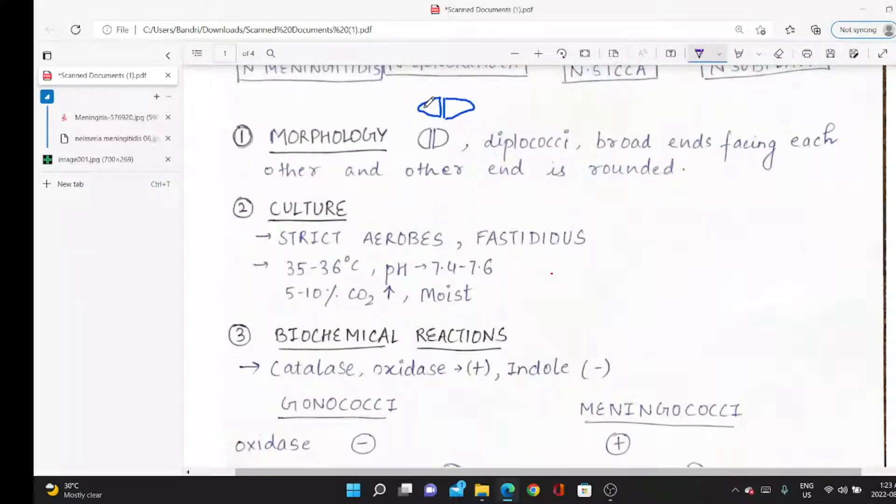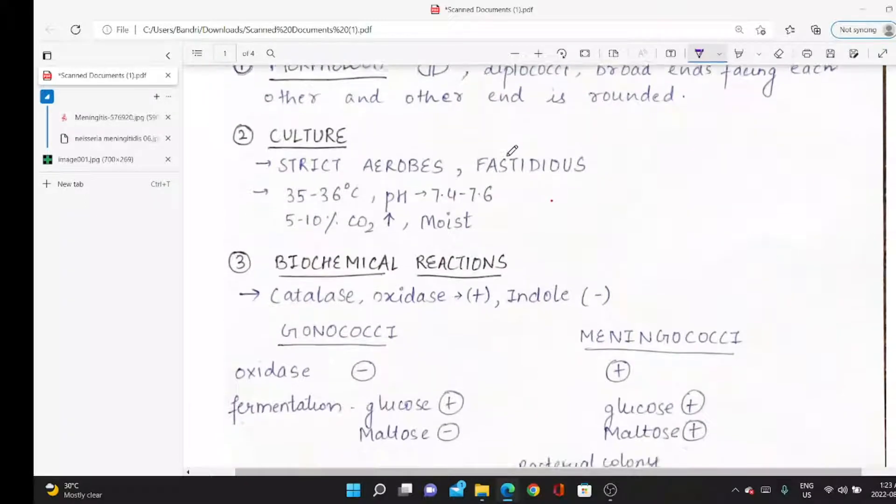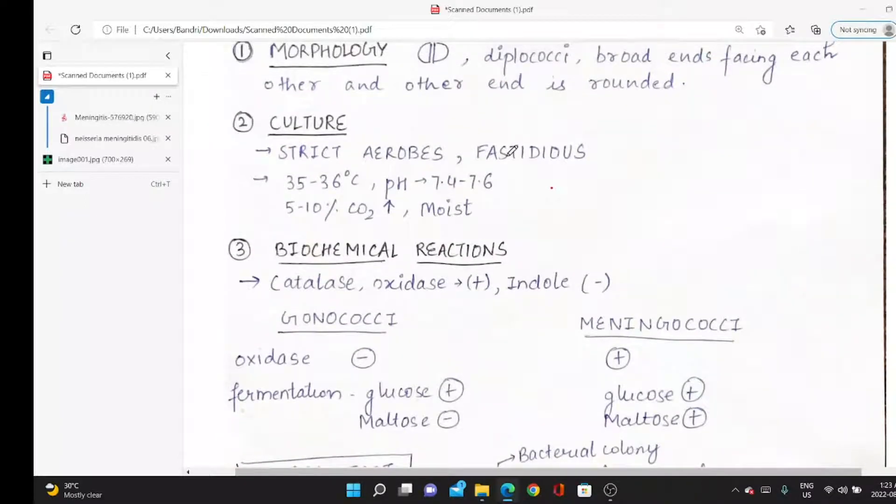We studied pneumococcus—the adjacent ends were flattened, same as meningitidis, but the other end was lancet-shaped, flame-shaped, and pointed. That's the difference. We culture it on blood agar or chocolate agar.